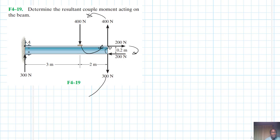and here we'll have a couple moment in this direction. Of course, anti-clockwise is positive and clockwise is negative. So let's work this out.